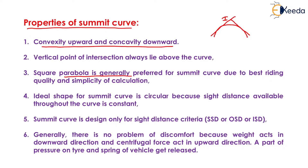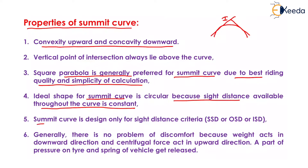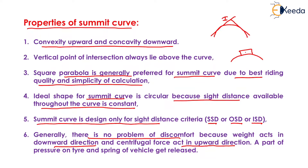Square parabola is generally preferred for summit curve due to the best riding quality and simplicity of calculation. The ideal shape for summit curve is circular because the sight distance available throughout the curve is constant. Summit curve is designed only for sight distance criteria — that is SSD (stopping sight distance), overtaking sight distance, or intermediate sight distance. There is generally no problem of discomfort because weight acts downward and centrifugal force acts upward, so a part of the pressure on the tire and spring of the vehicle gets released.